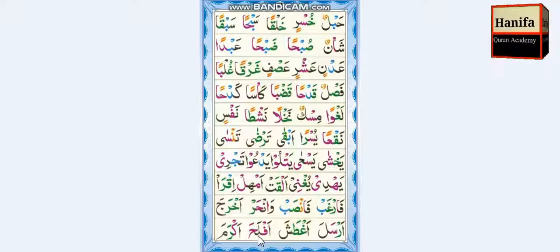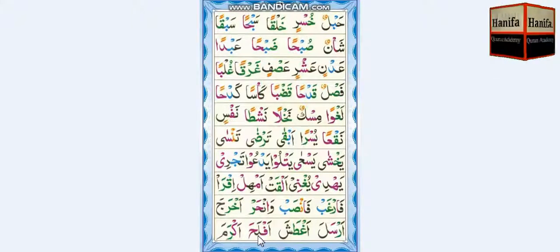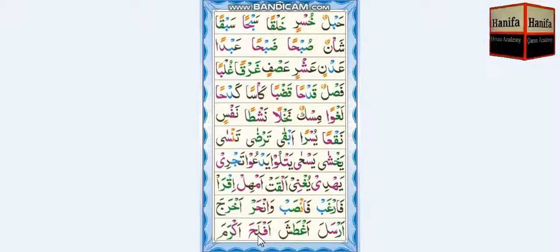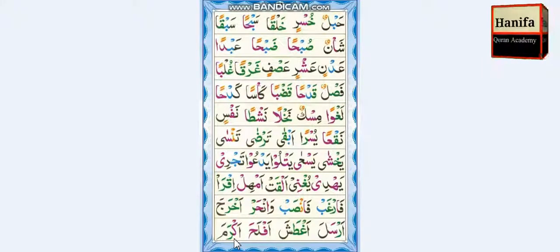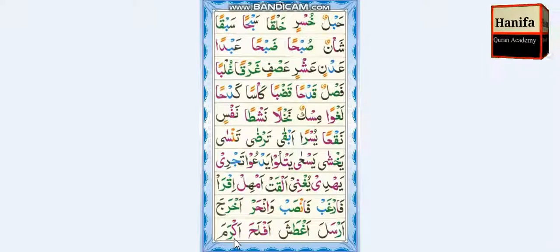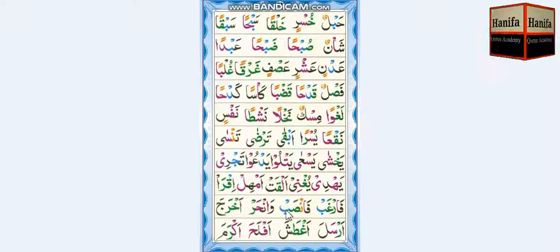Hamza, Fa, Fatha — af. Lam, Fatha — la. Af-la. Ha, Fatha — ha. Af-la-ha. Hamza, Ka, Fatha — aq. Ra, Fatha — ra. Aq-ra. Mim, Fatha — ma. Aq-ra-ma.